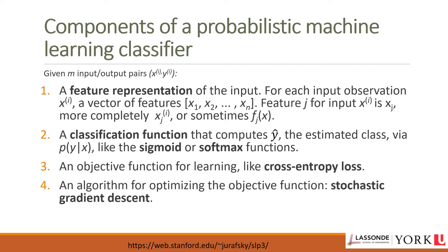Machine learning classifiers require a training corpus of m input-output pairs (x_i, y_i). There are several components we need to determine. The first is the feature representation of the input: for each observation x_i, there is a vector of features from x_1 to x_n. Feature j for input x_i is denoted x_j of i, or sometimes f_j of x.